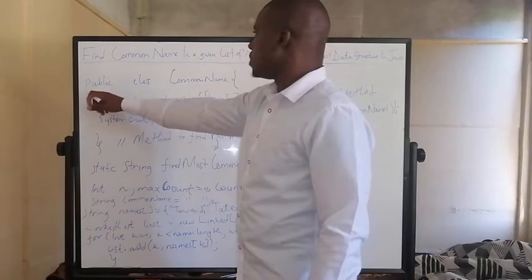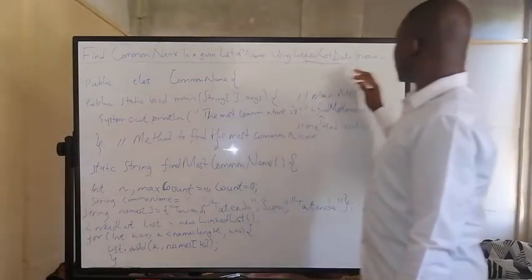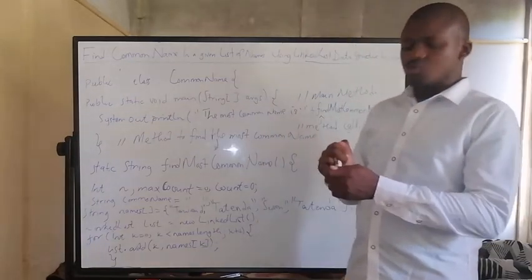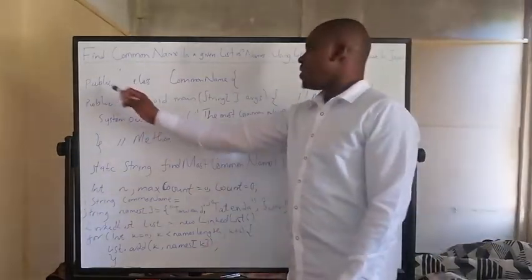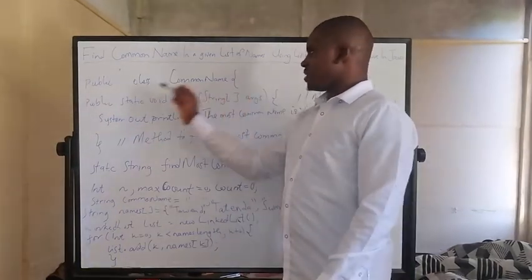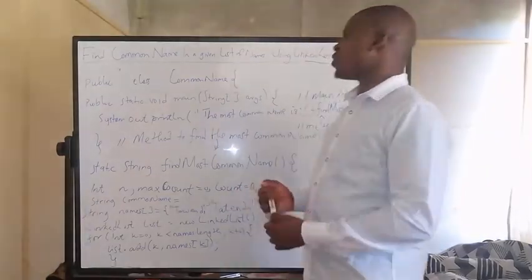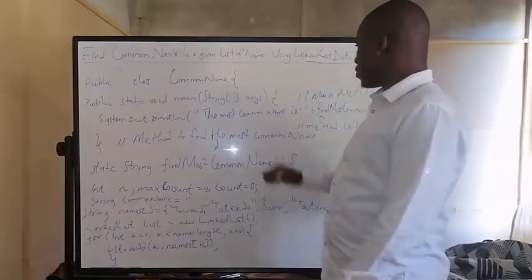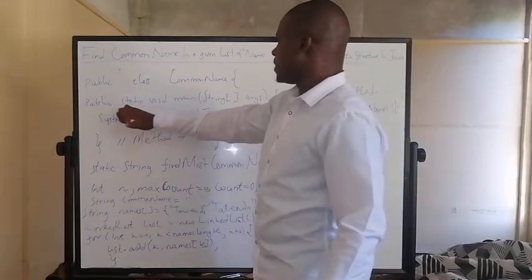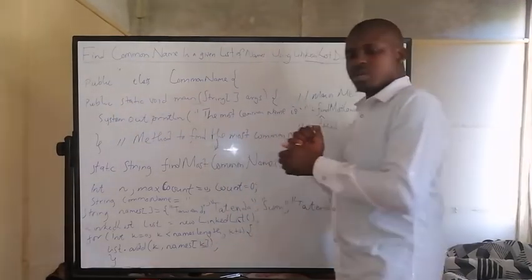Firstly, you have to import the linked list data structure. Do not forget, otherwise you'll get an error. And then here you have the public class CommonName. This is our main class because it contains the main method. And then from there, we've got this main method.